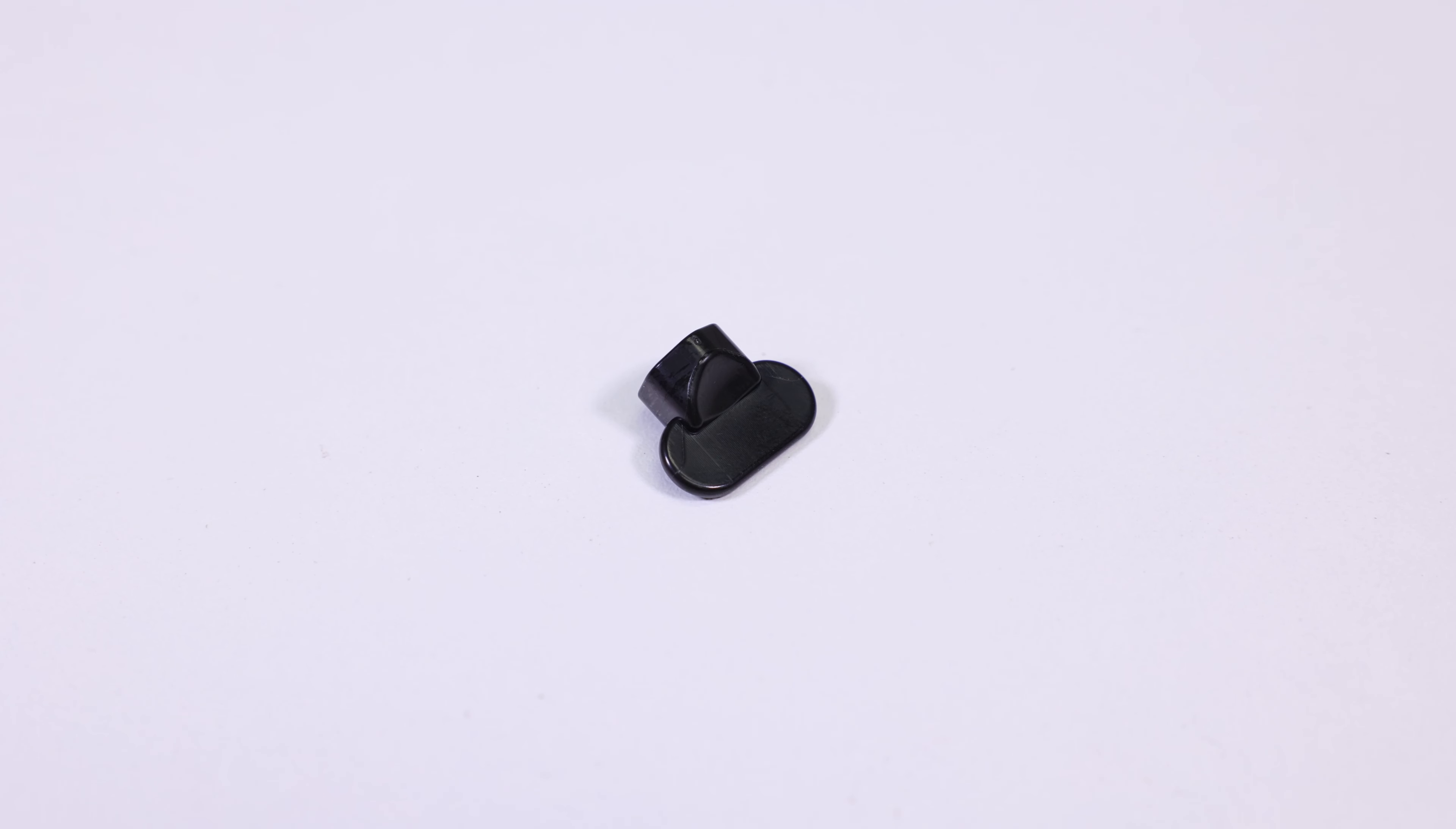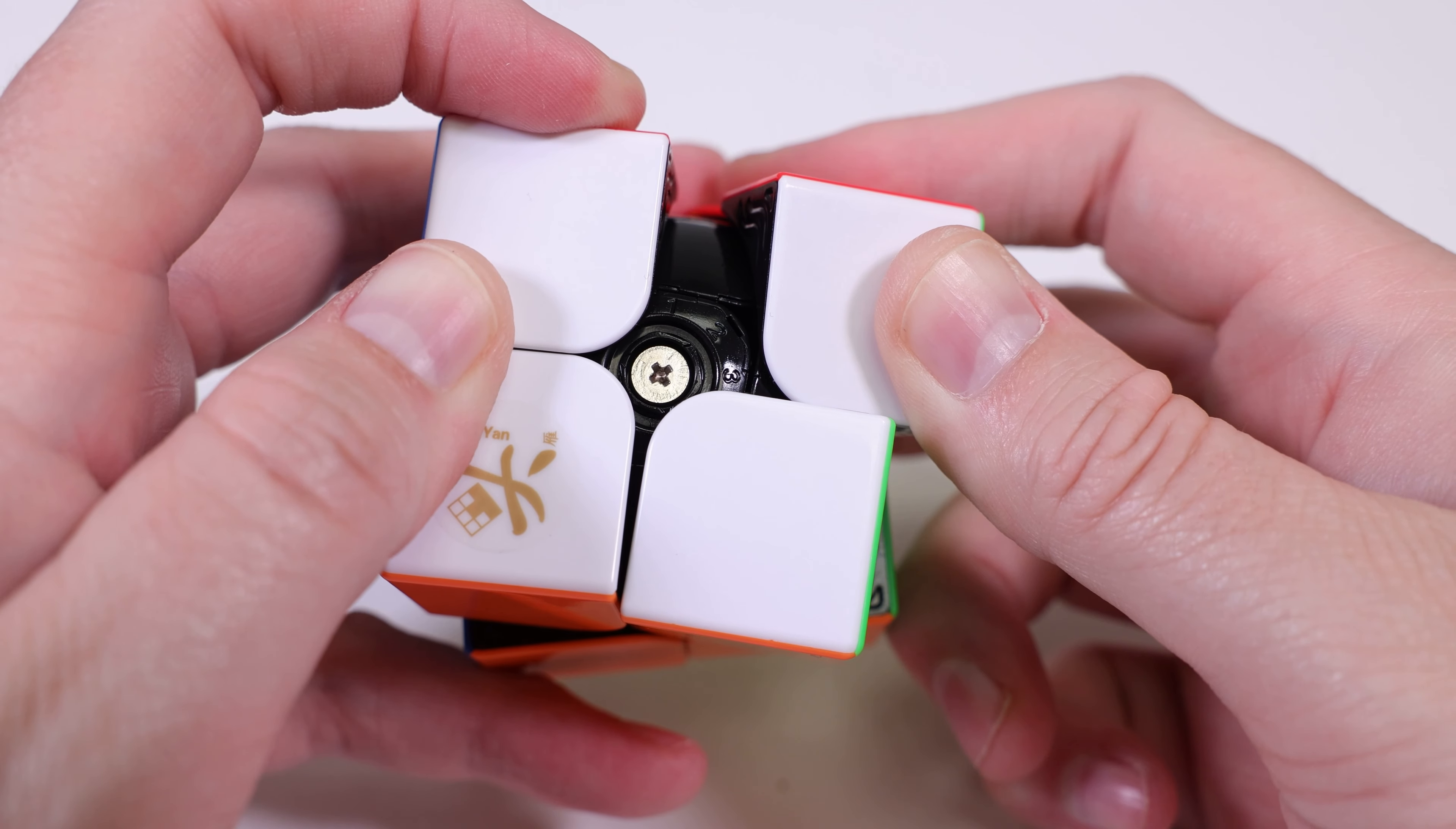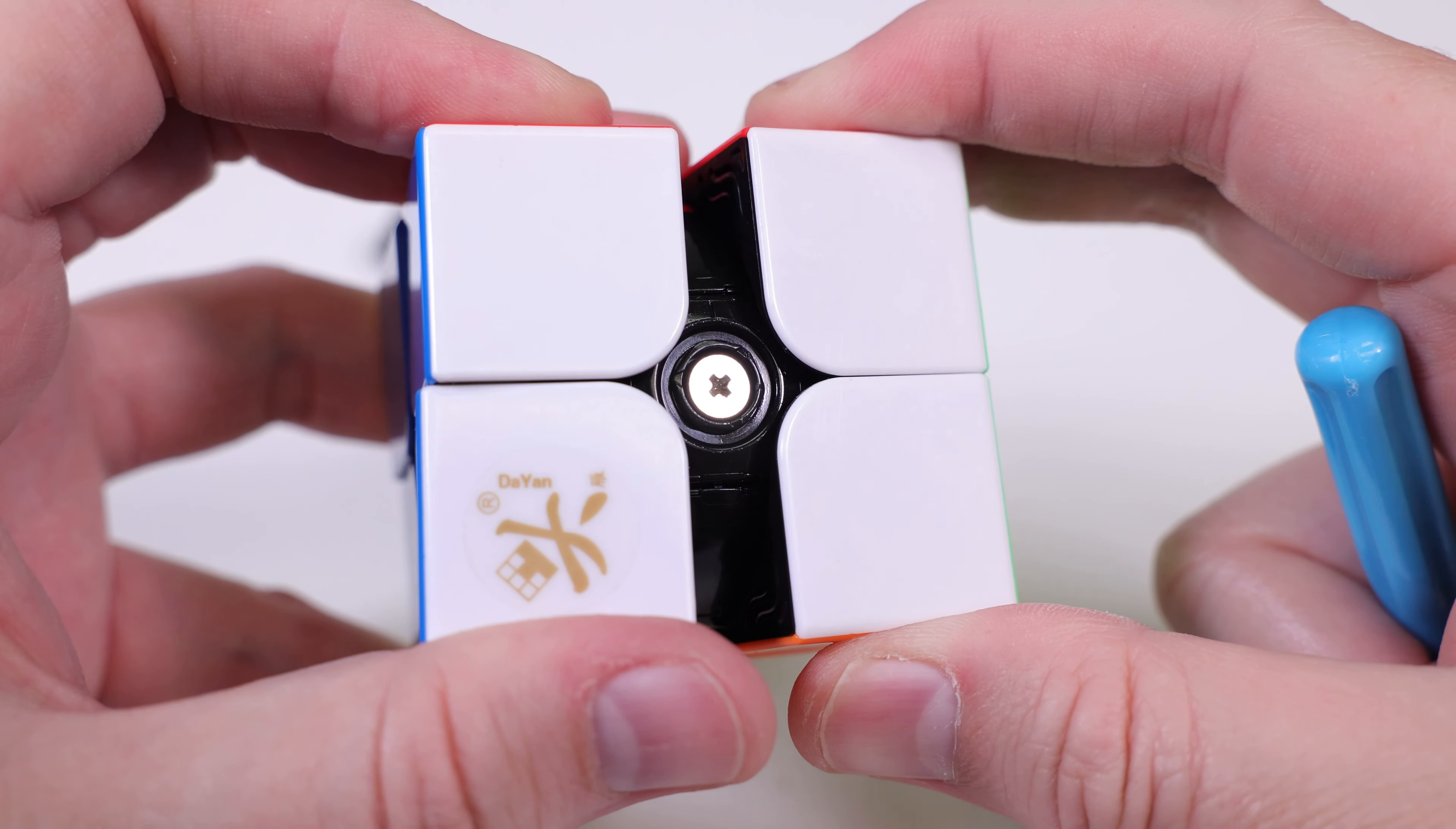As mentioned before, the puzzle comes with this small black tool. If you look closely at the centerpieces, you can see that there are numbers 1 through 3 around each of them. Use the tool to adjust any of the arrows to one of the numbers. Make sure every center is adjusted to the same number and you're all set.